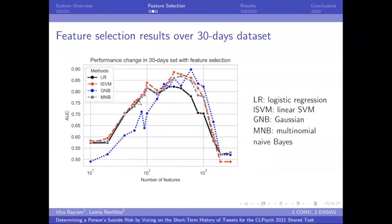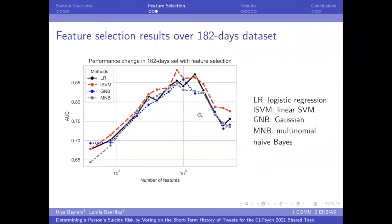And here are the results. These are the results over the shorter spanning dataset. We have peaks here over the four methods. And we see that including all features would result in a random classification basically. And this is the longer spanning dataset. We also have peaks here. And also including all features would create a lot of problems.